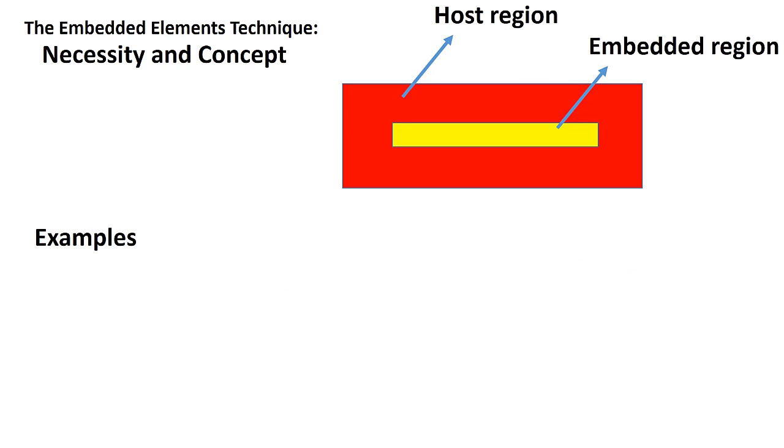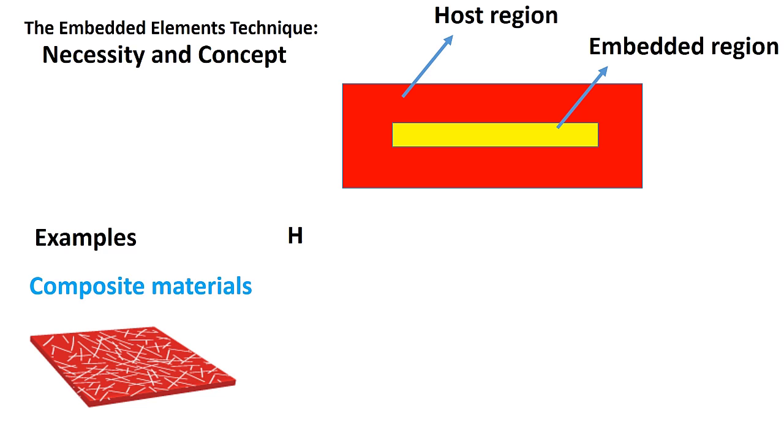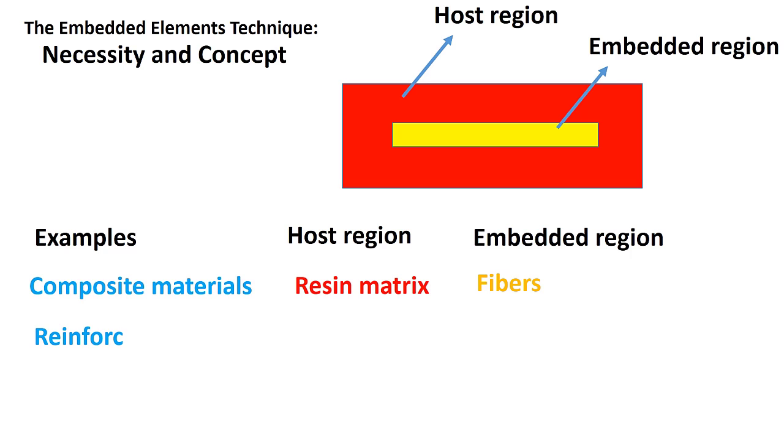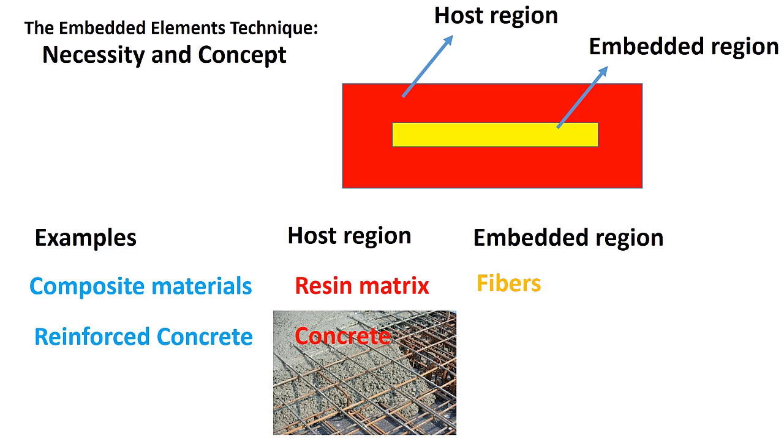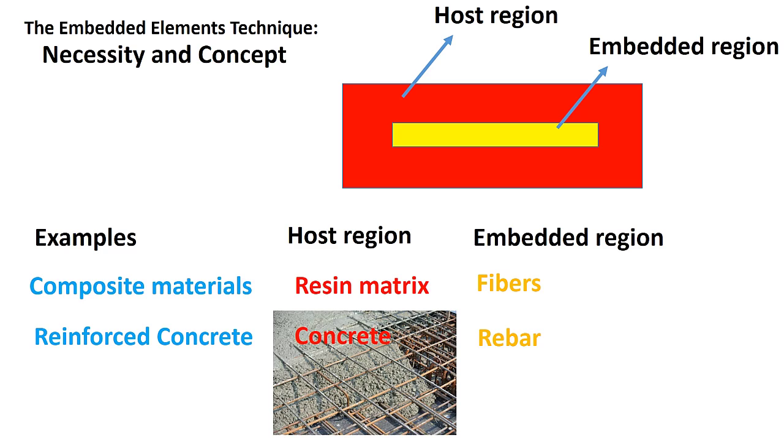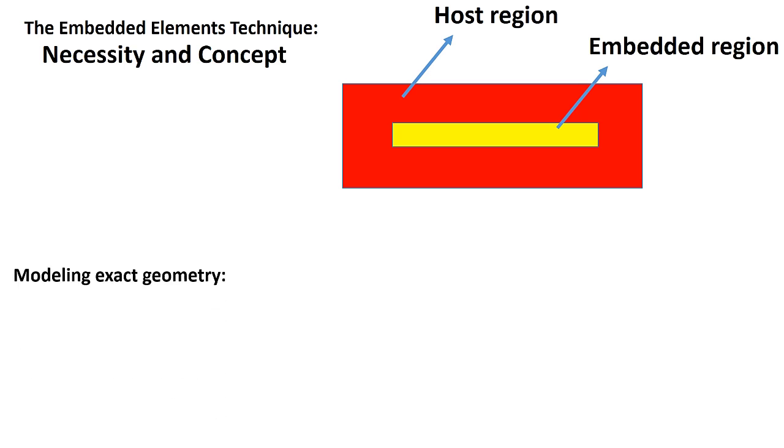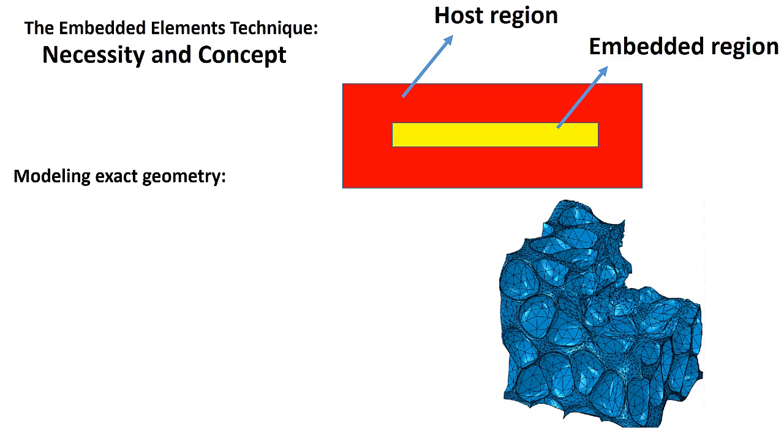For example, in modeling composite materials, the resin matrix is considered the host region, while the fibers are the embedded region. In reinforced concrete, the concrete is the host region, and the reinforcing rebar is the embedded region. Another example is foam-filled lattice structures, where the foam is considered the host, and the lattice is the embedded region. The exact method for modeling these structures is to create an exact geometry of both the host and embedded parts.